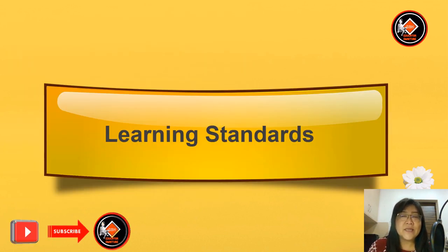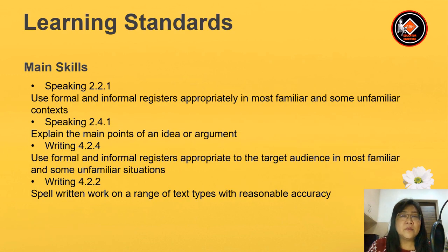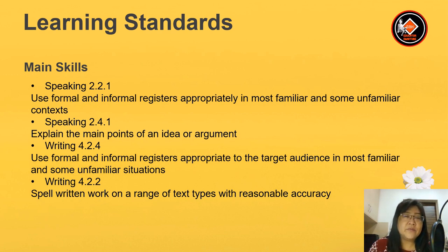First, let's look at the learning standards. We have the main skills: Speaking 2.2.1 — use formal and informal registers appropriately in most familiar and some unfamiliar contexts. Speaking 2.4.1 — explain the main points of an idea or argument. Writing 4.2.4 — use formal and informal registers appropriate to the target audience in most familiar and some unfamiliar situations. Writing 4.2.2 — prepare written work on a range of text types with reasonable accuracy.